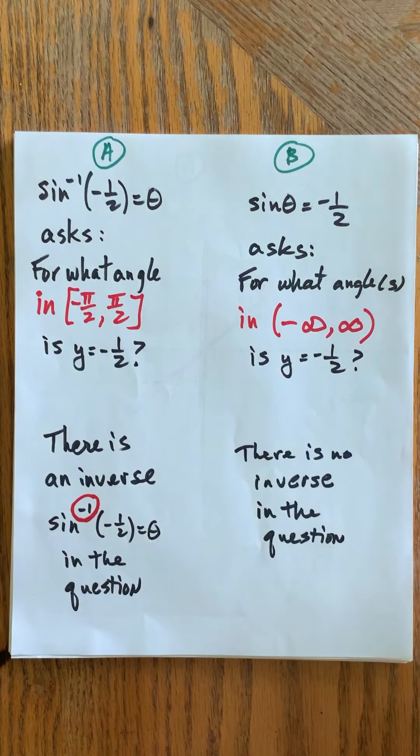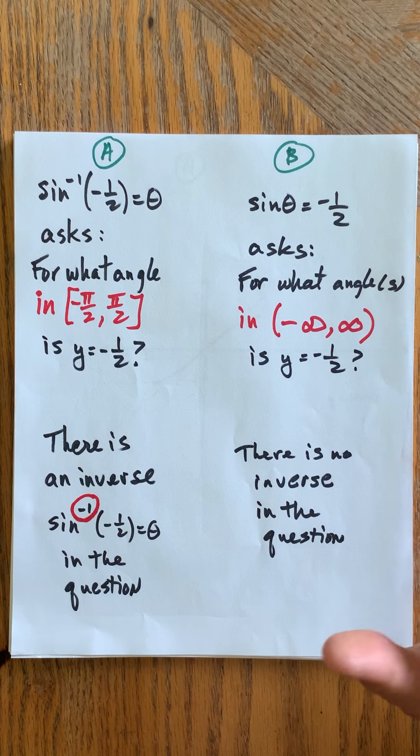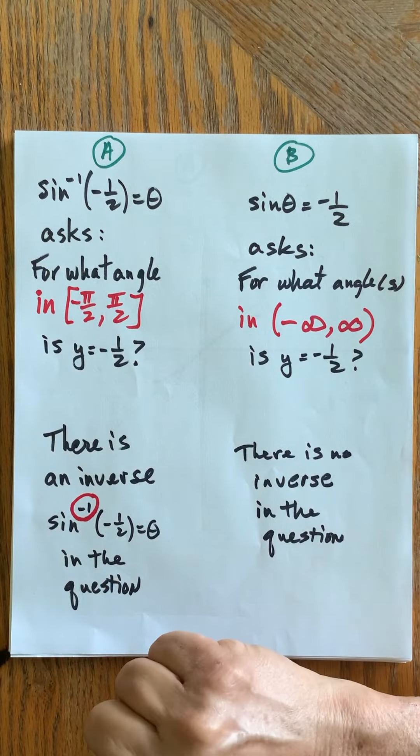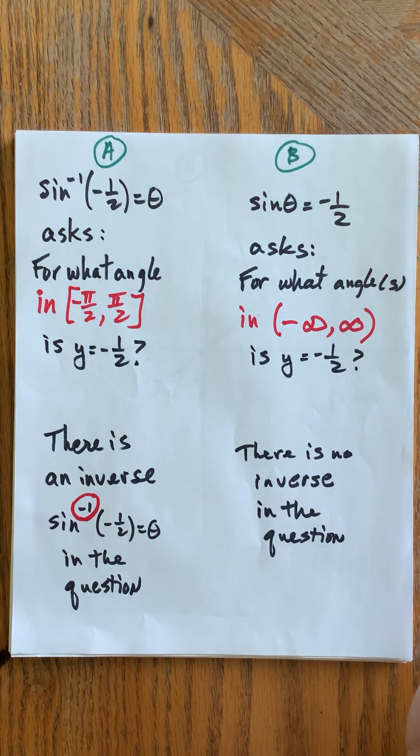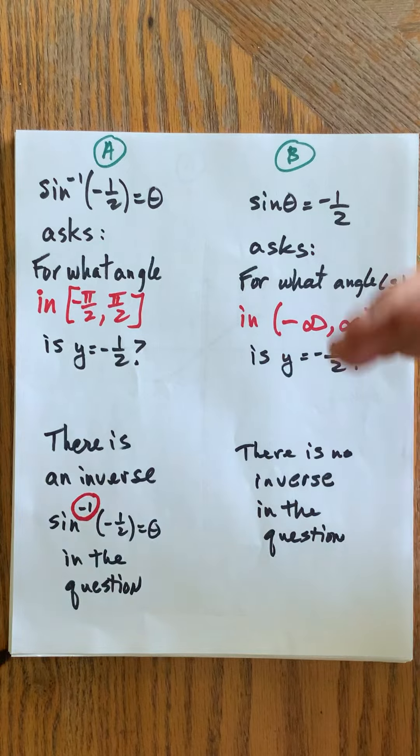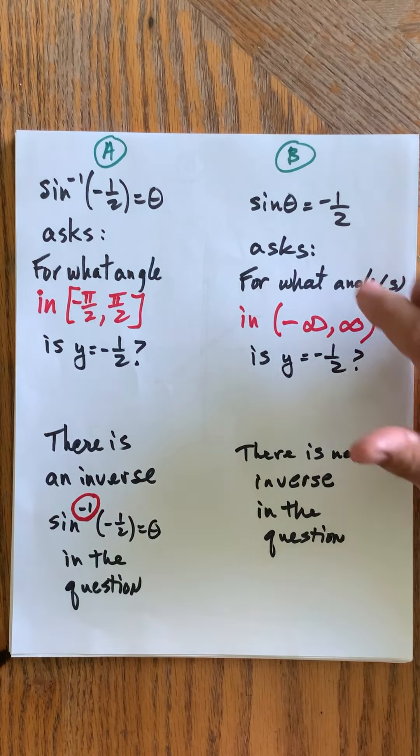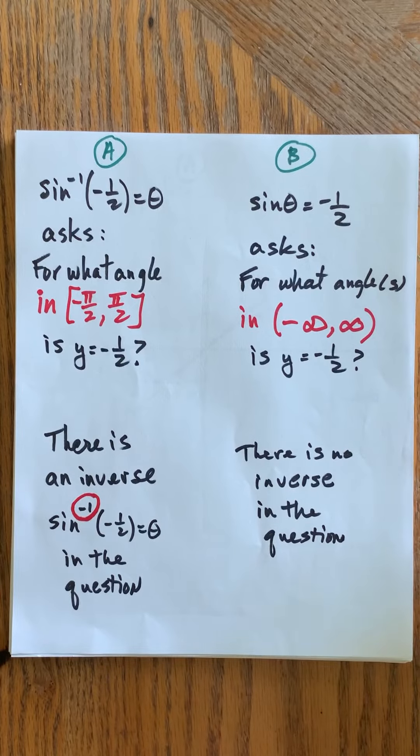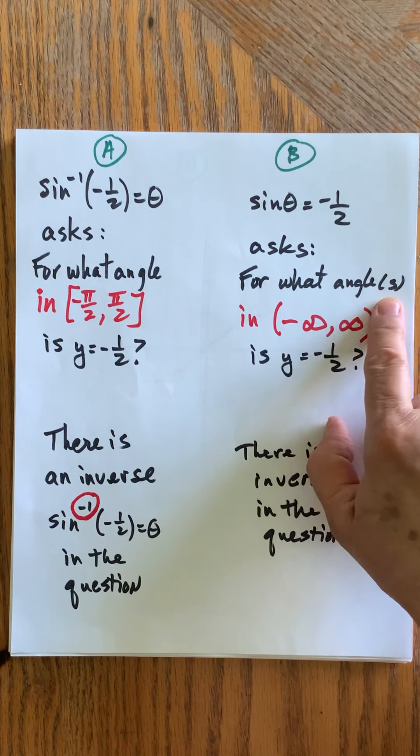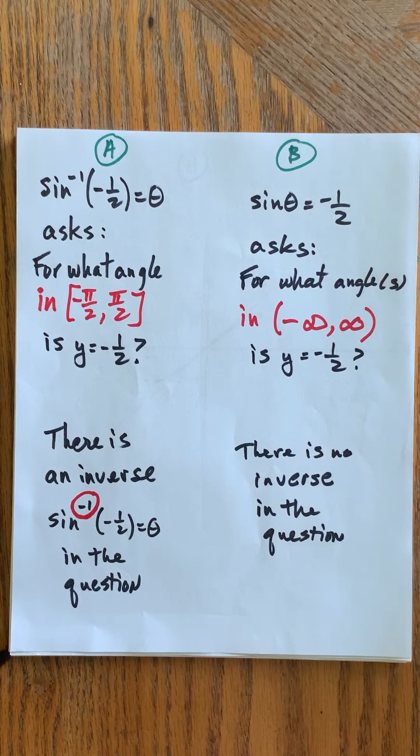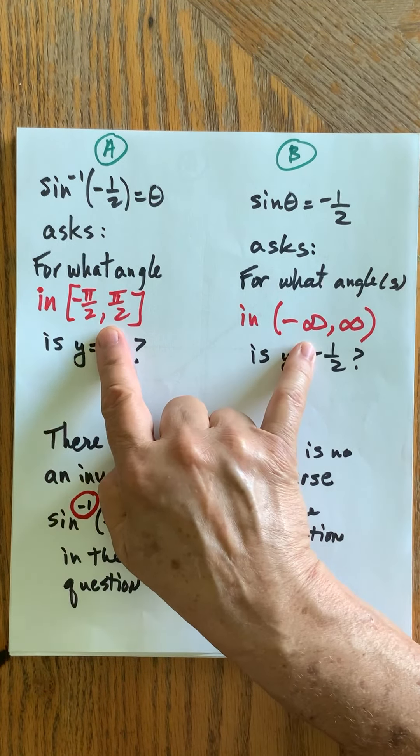Here where you have sine inverse of negative a half equals an angle, what that really asks for is for what angle in the interval, and that's what's really key here, in the interval negative π/2 to π/2, or negative 90 degrees to positive 90 degrees depending on what mode you're in, is the y coordinate, because it's sine, equal to a length of negative a half. The fact that there's this interval is what really makes this a different question from the equation that says take the sine of what angles would give me negative a half. And in that case you're asking for what angles from negative infinity to positive infinity, you're not restricted to this interval. So I can see where they're almost the same, but this interval difference is so important.